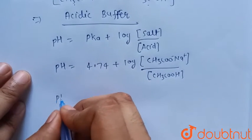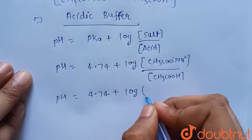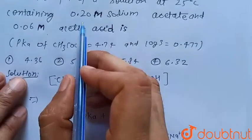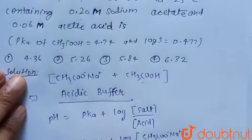So pH = 4.74 + log(0.20/0.06), where sodium acetate concentration is 0.20 M and acetic acid concentration is 0.06 M.